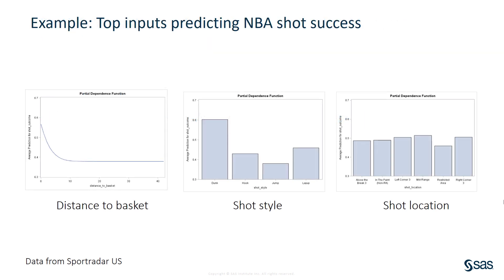Here, partial dependence plots are shown for the top three inputs of a model that predicts success of NBA basketball shots. For this model, each observation is a shot and the columns are shot characteristics. Each plot shows average model prediction for each value of a single model input: distance to basket, shot style, and shot location, respectively. The first two plots show that there is a success advantage for shots taken near the basket and for dunk shots. The third plot shows a small disadvantage for shots taken in the restricted area. Because the three plots use a consistent y-axis scale, you can compare the success rate for each type of shot. For example, shots taken near the basket are approximately 20 percentage points more successful than shots taken from 10 feet away, which is about the same advantage as for dunk shots over hook shots.